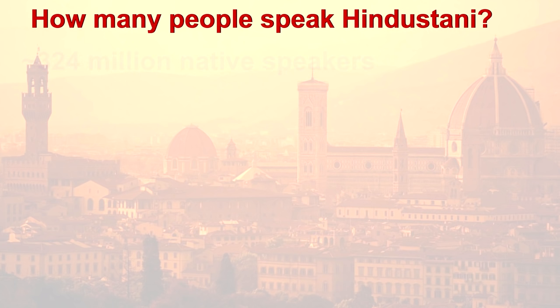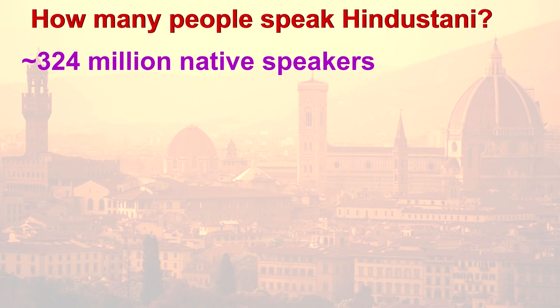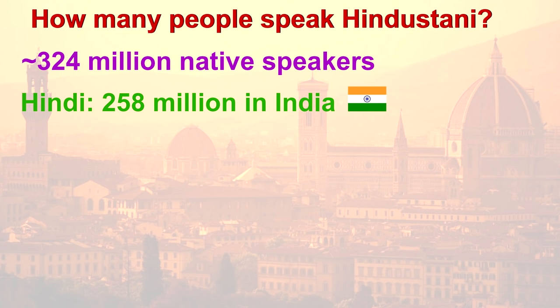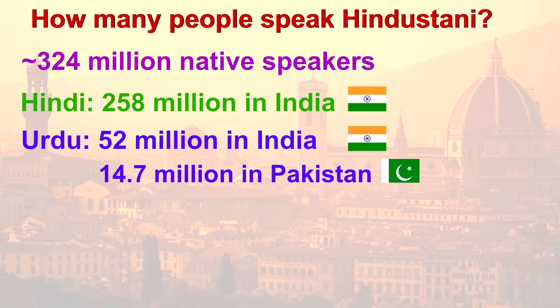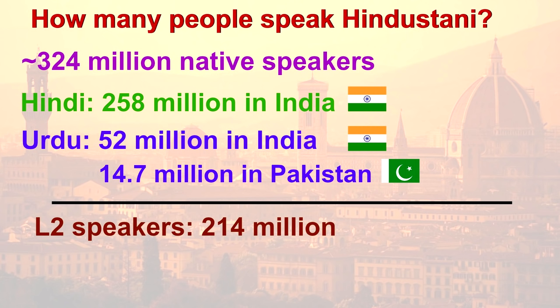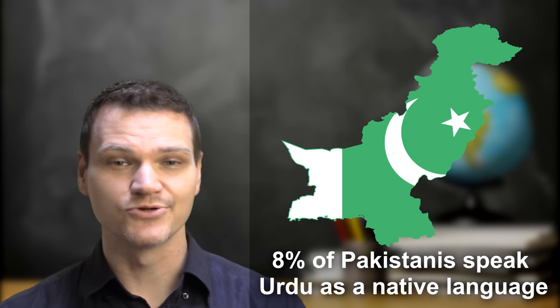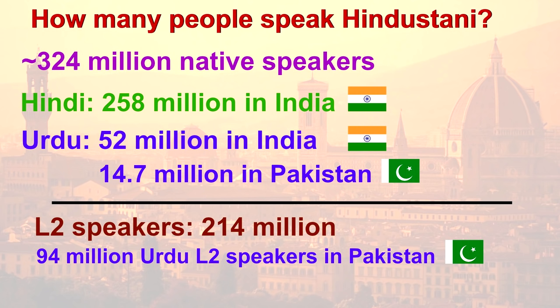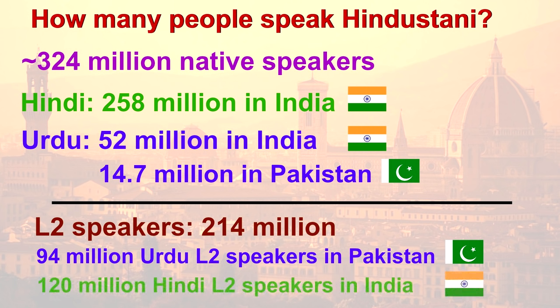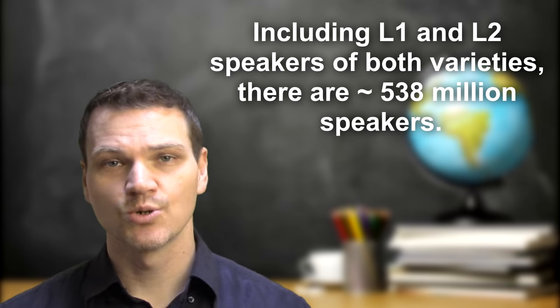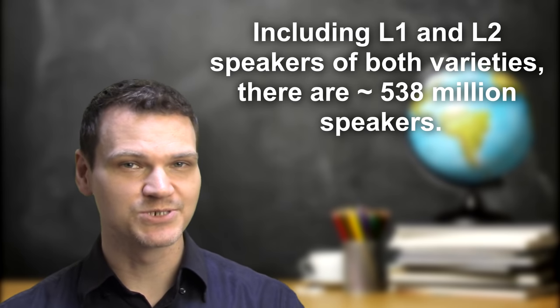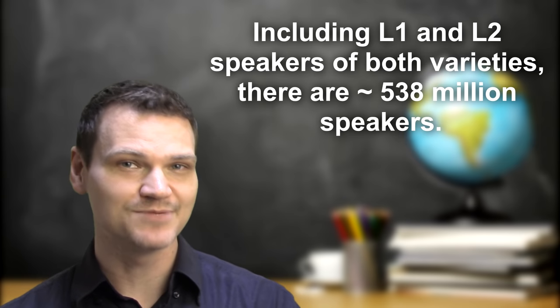Hindustani is spoken as a native language by lots and lots of people. It depends on how you count it, but around 324 million people are native speakers of either Hindi or Urdu. There are about 258 million speakers of Hindi in India and about 52 million speakers of Urdu in India, and 14.7 million speakers of Urdu in Pakistan — and that's referring to native speakers. They also function as lingua francas in very linguistically diverse regions. There are an additional 214 million second language speakers of Hindustani. This is perhaps most striking in Pakistan, where only 8% of the people speak Urdu as a native language, but over 94 million people speak it as a second language because it is widely learned as the language of education. There are also 120 million second language speakers of Hindi in India. So if we include both native speakers and second language speakers of both varieties of Hindustani, then there are about 538 million speakers of the language.